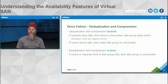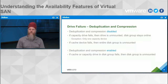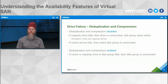If you're using deduplication and compression with vSAN 6.2, drive failures have different impacts. Without dedupe and compression, a failed capacity drive is unmounted while the disk group stays online — unless it's the only capacity drive in that group, in which case the disk group goes offline. If a cache device fails regardless, the entire disk group is unmounted. With deduplication and compression enabled, any cache or capacity drive failure causes the entire disk group to become unmounted. Keep this in mind when planning your environment.